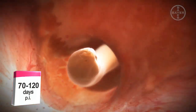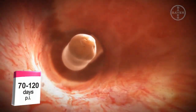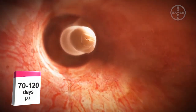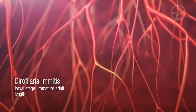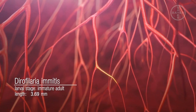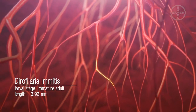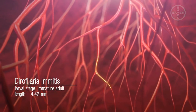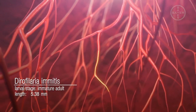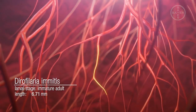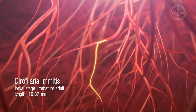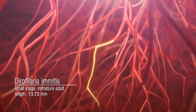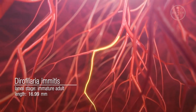At this point, the immature adult heartworms are about 1 to 1.5 inches in length. They now begin to grow massively, pushing into larger and larger pulmonary blood vessels, until some of them finally end up in the pulmonary artery, close to the heart.